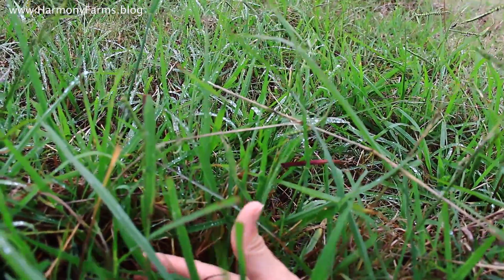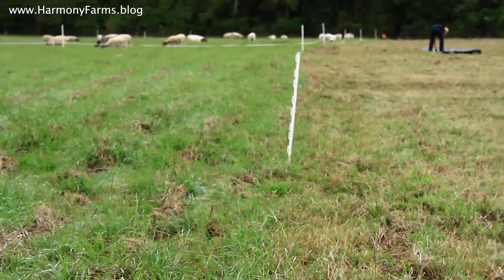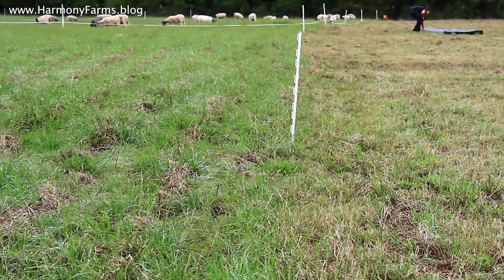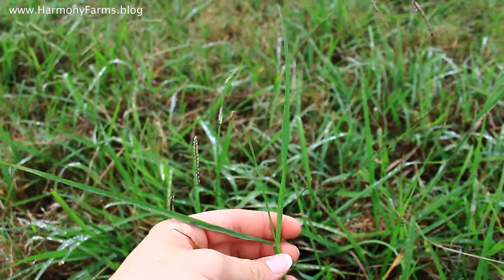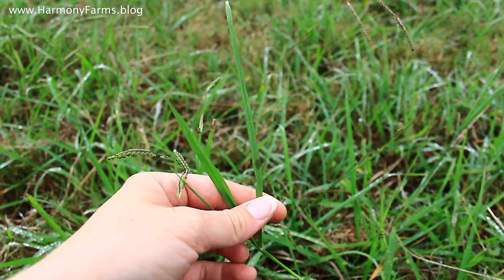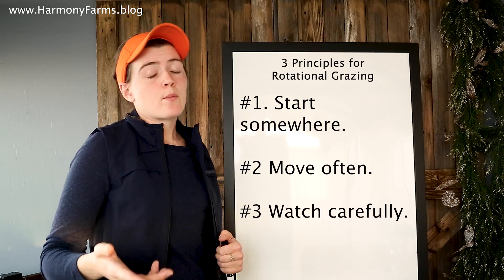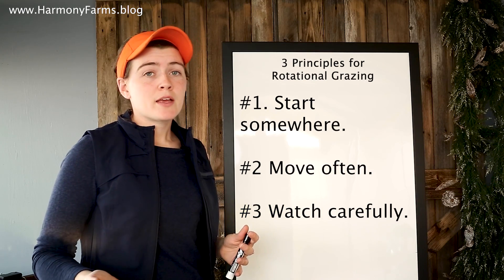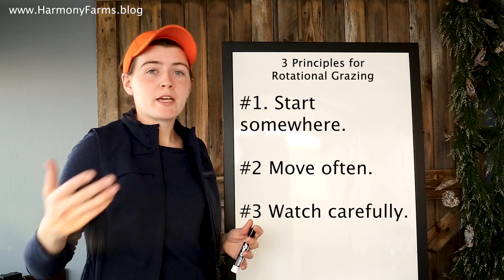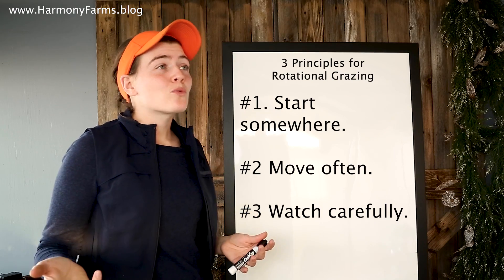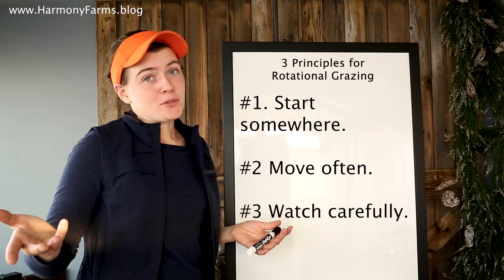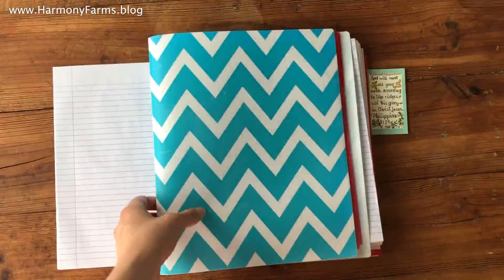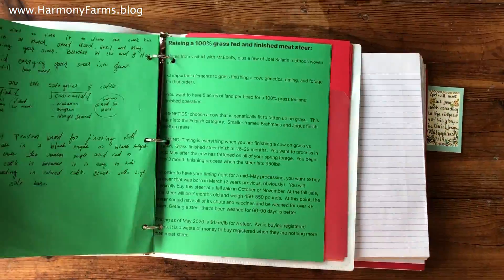Number three: watch, watch, watch, and very closely. If you move your animals off a plot chosen for one day and notice they ate way into the ground, you didn't give them enough. If they left a lot behind, you gave them too much. Those three observational things will really allow you to get a good start no matter where you're at.